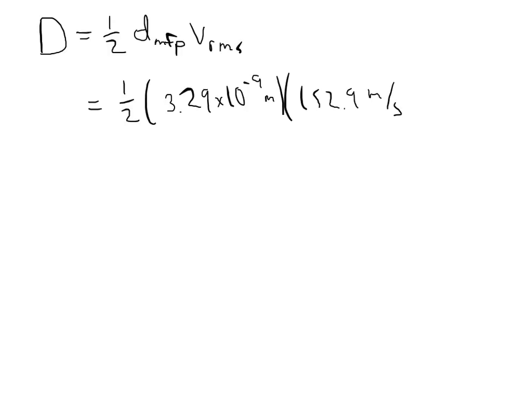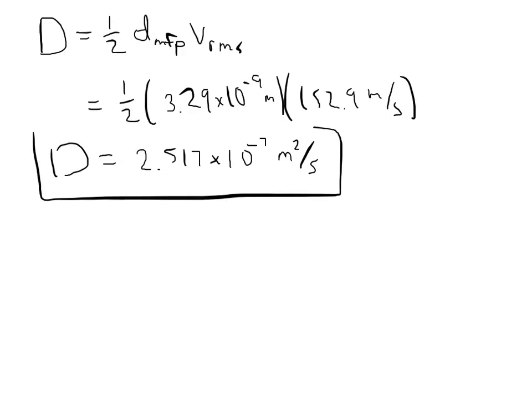And now that we've calculated the mean free path and the RMS velocity, we can go back and calculate the diffusion coefficient. And recall that that diffusion coefficient is 1 half times the mean free path times the RMS velocity. And so taking the numbers that we just got, that's 1 half times 3.29 times 10 to the minus 9 meters, times the RMS velocity, which is 152.9 meters per second. We get a number for our diffusion coefficient that's 2.517 times 10 to the minus 7 meters squared per second. And so there's my diffusion coefficient.